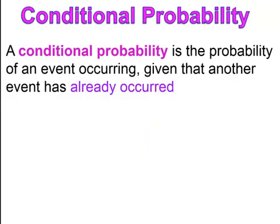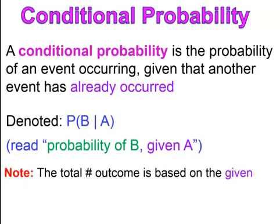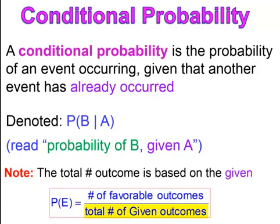The next type of probability is conditional probability — the probability of an event occurring given that another event has already occurred. The probability of B given A is written as P(B|A). A key note: the total outcome is always going to be based on the given. In a conditional probability, the total is based on the given, because we're already told something and that eliminates everything else that is not part of that given information.